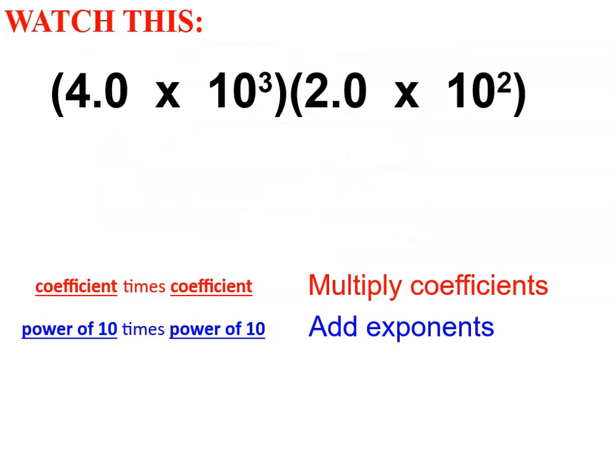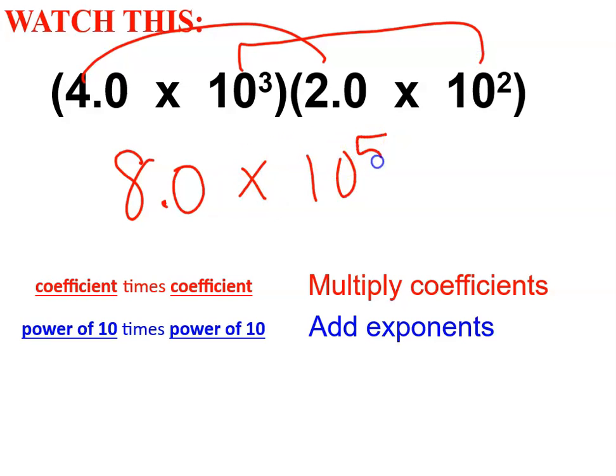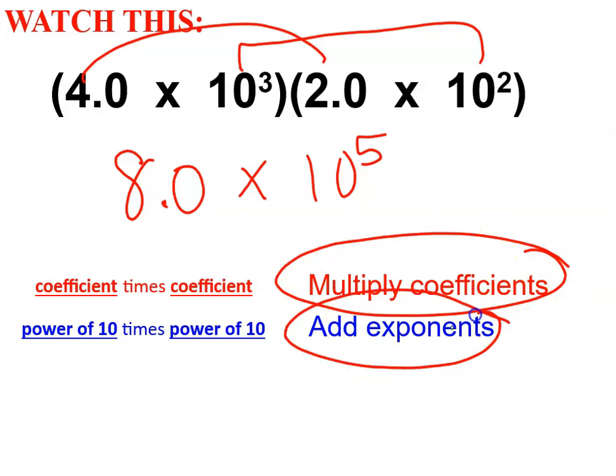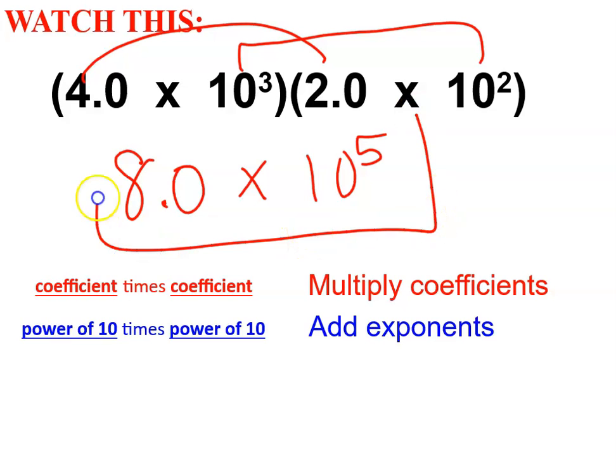Let's try another one. 4.0 times 2.0 is 8.0. 10 to the 3rd times 10 to the 2nd is 10 to the 5th. Multiply the coefficients. Add the exponents to the powers of 10. That's finished.